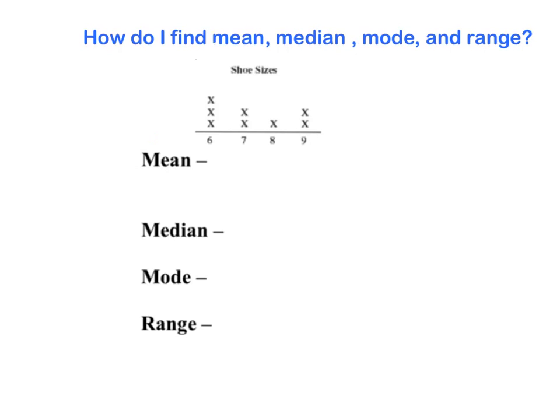So I need to find the mean, the median, the mode, and the range of these shoe sizes. Each X is represented by one pair of shoes. So I've got three size six shoes, two size seven shoes, one size eight shoe, and two size nine shoes.